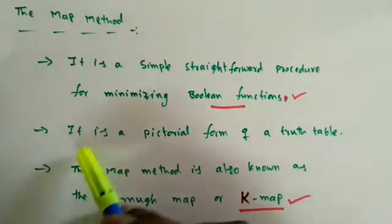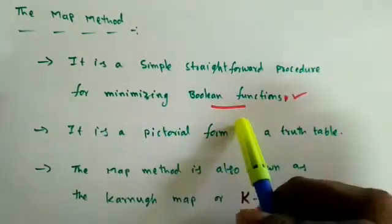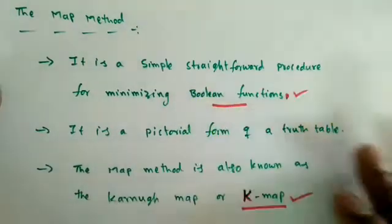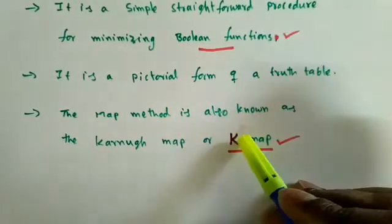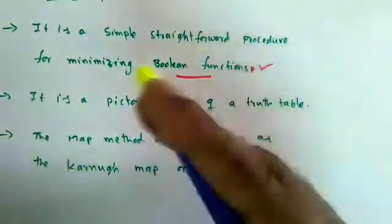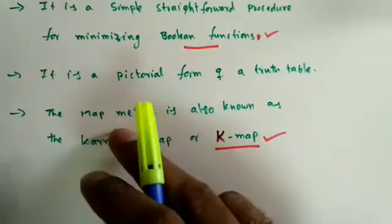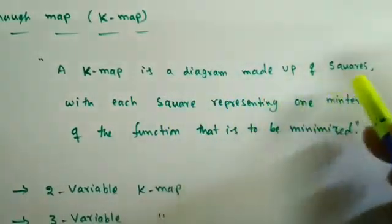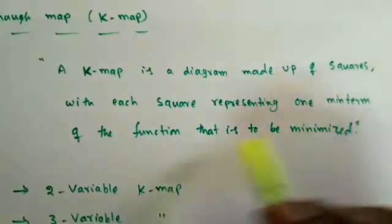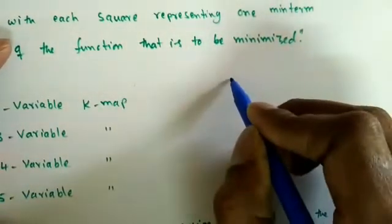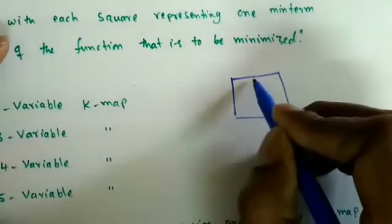The map method is a simple, straightforward procedure for minimizing Boolean functions — much quicker than Boolean algebra properties. It is a pictorial form of a truth table; once we know the truth table, we can map the function values into the K-map and easily simplify. The map method is also known as the Karnaugh map or K-map.